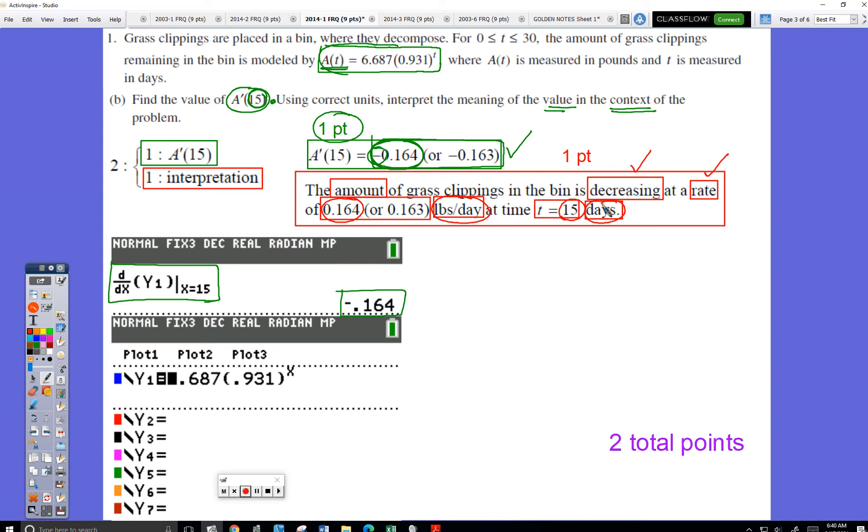It's not happening at some other day. It's happening on day 15. If you have these red boxes in your explanation, you'll get the point. If you're missing any of those keywords, you did not get the point. They're pretty strict on that. So two points possible on part B.